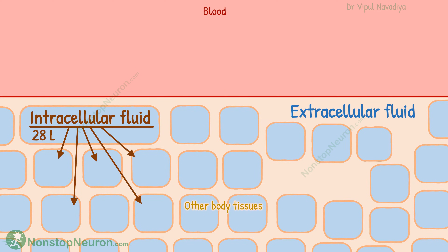The total fluid in all the cells is about 28 liters. This is 40% of total body weight fluid and about two-thirds of the body fluid.